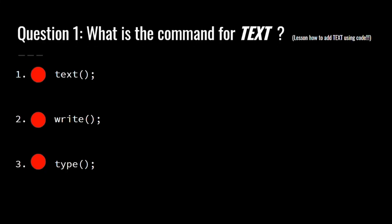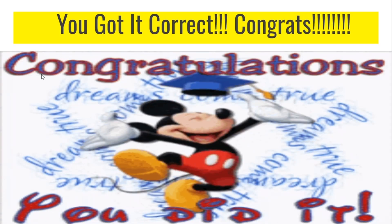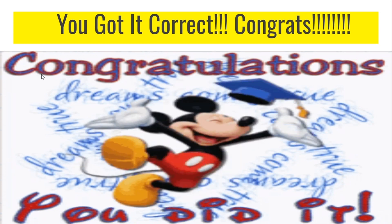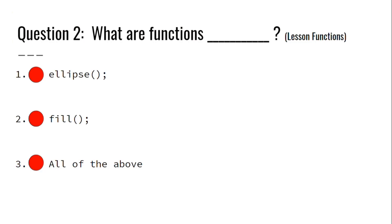Question number 1. Ayman, what is the command for text? Number 1: Text followed by parentheses and a semicolon. Number 2: Write followed by parentheses and a semicolon. Or number 3: Type followed by parentheses and a semicolon. Choose your answer. I think number 1. Let's see if it works. Yay! You got it correct.